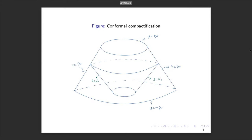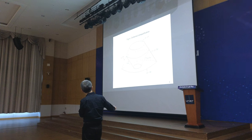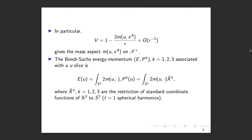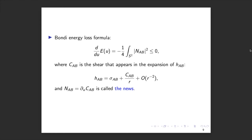Each u-slice looks like a null hypersurface — a two-sphere. For each one, you define the Bondi-Sachs energy-momentum by integrating over the spherical variables S². You get the energy E associated with each u, and the linear momentum associated with u, giving a full four-vector. Here x^K_T are restrictions of standard coordinate functions on ℝ³ to S², corresponding to L = 1 spherical harmonics. The well-known energy loss formula gives you the derivative of this energy, all under the assumption of the vacuum Einstein equation, which makes the right-hand side manifestly negative.